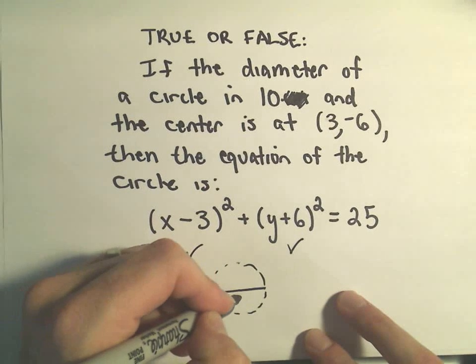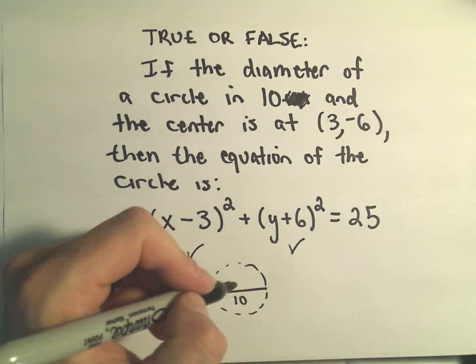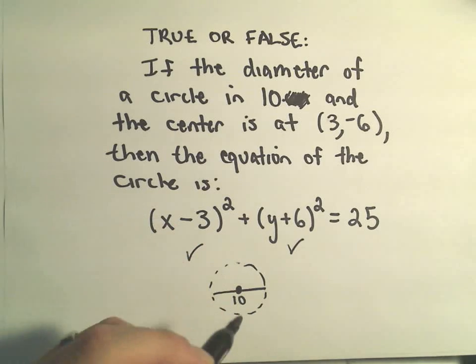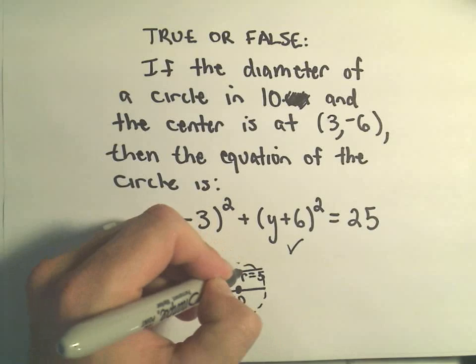But remember, the diameter is the distance all the way across that goes through the center of the circle. So in this case, since the diameter is 10, the radius in fact would equal 5.